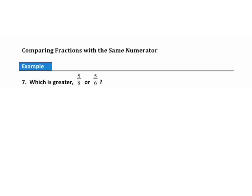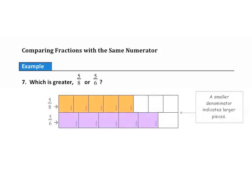Comparing fractions with the same numerator. Example 7: Which is greater, five-eighths or five-sixths? Both fractions have the same numerator of five, meaning five pieces are shaded in each. To determine which is bigger, we need to figure out which pieces are larger — eighths or sixths. Sixths are larger than eighths because the object is cut into fewer pieces. Fewer pieces means larger pieces, so five-sixths is the larger fraction.